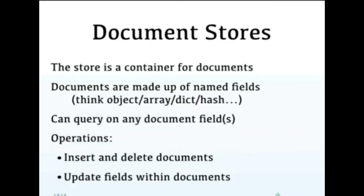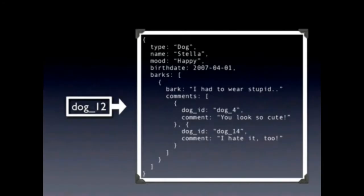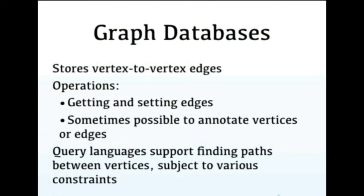The first type is Document Stores — a container of documents. Examples include Apache CouchDB, Couchbase, and MongoDB. We can insert, retrieve, and update documents easily. For example, a document named Doc12 may have fields like Type, Name, Mode, and Birth. All of this information can be stored in a collective document.